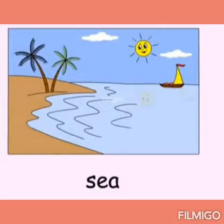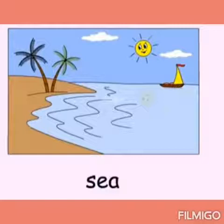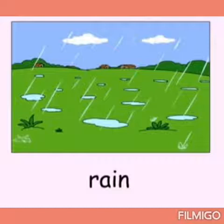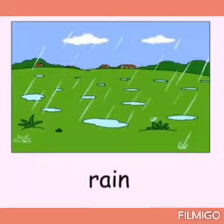After that, lake. Water also comes from a lake. After that, sea — S-E-A — sea means samudra. We also get water from the samudra. After that, rain. We have told you that rain is the most important source of water.